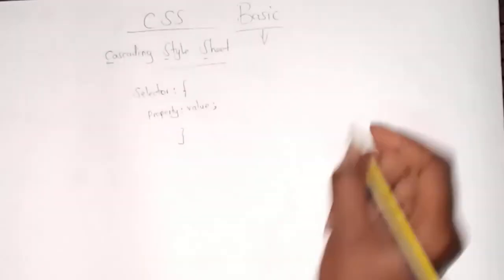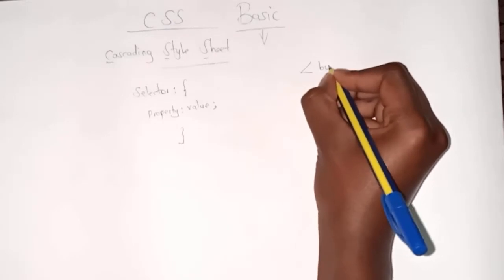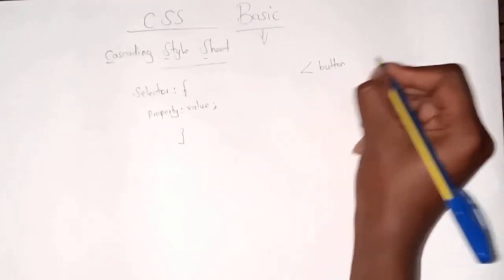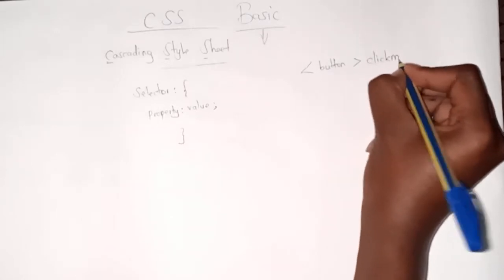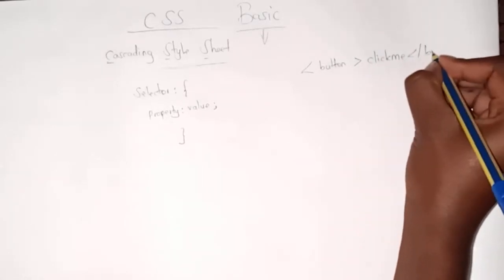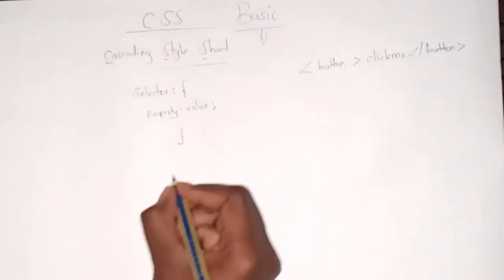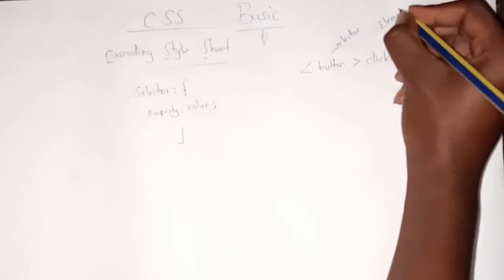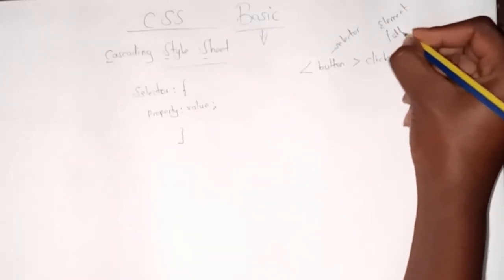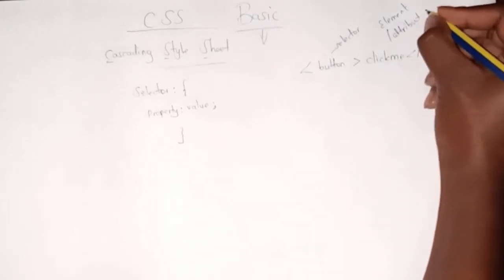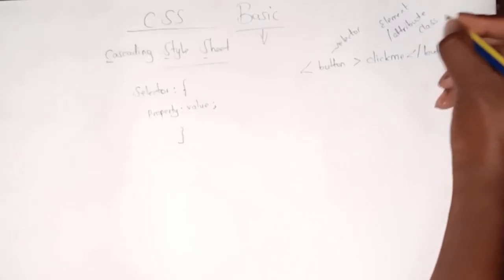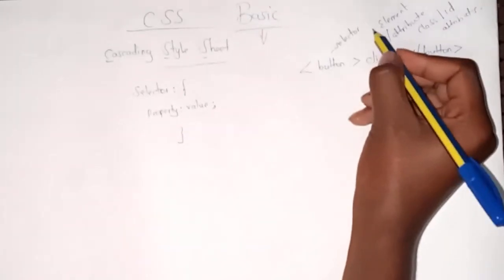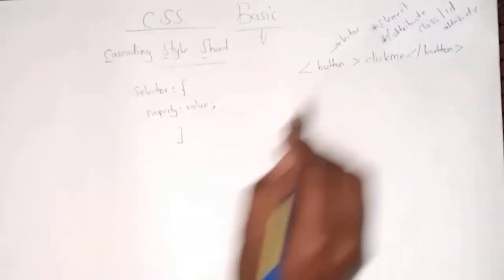In the HTML introduction we talked about button, for example a button that can have attributes. So this button is the selector. The selector can be an element or an attribute, but not just any attribute—the class or ID attributes. So element or attribute.